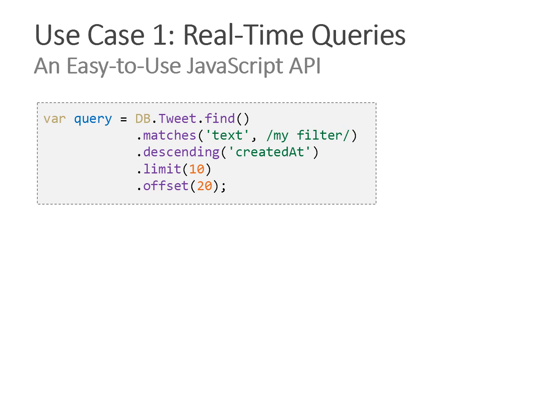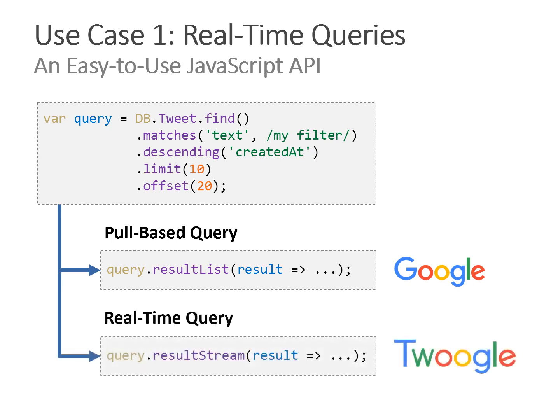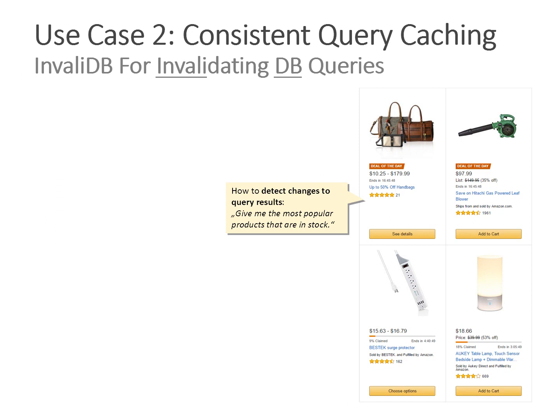Now let's discuss application scenarios. Currently there are two main use cases for real-time queries at Backend. The first is providing this functionality to developers. We have an interface for pull-based queries and one for real-time queries that use essentially the same syntax — you use a different keyword, provide a query object, execute a query function, and provide a callback function called whenever there's a result. For pull-based queries it's called once; for real-time queries it's called on initial result or on each update — a very easy way to create real-time applications.